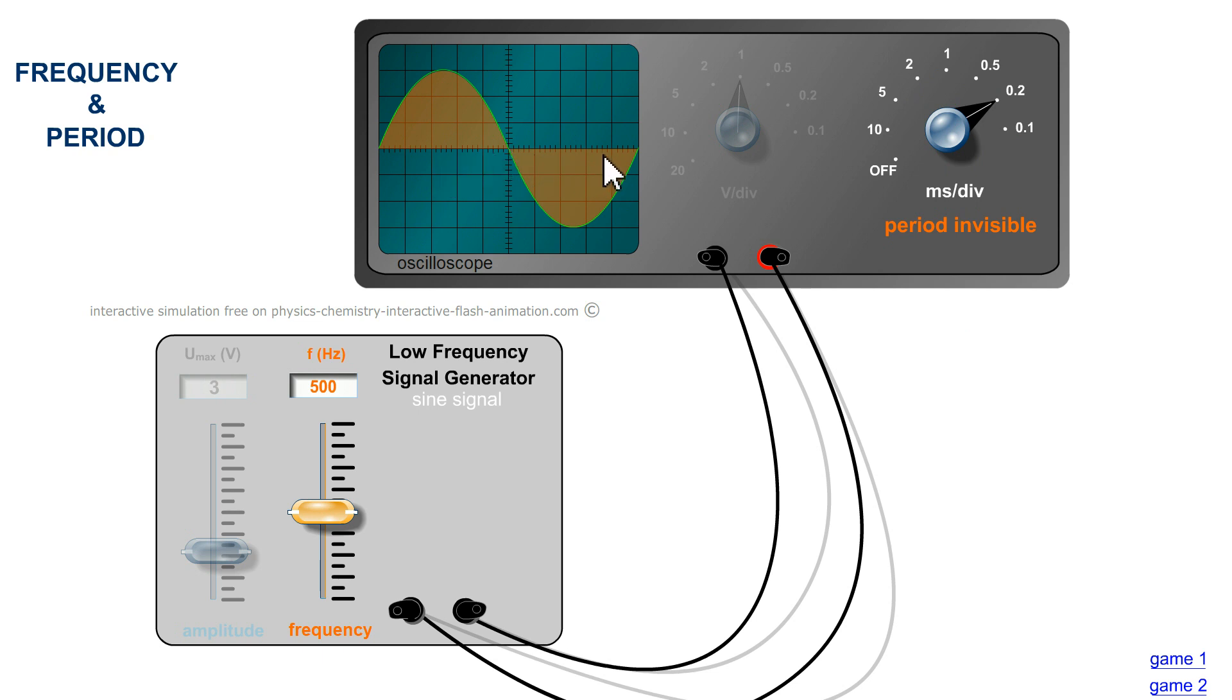Ten divisions times 0.2 milliseconds gives two milliseconds. One divided by two times ten to the minus three seconds. One thousand divided by two is 500 announced here. So a frequency of 500 hertz corresponds well to a period of two milliseconds.